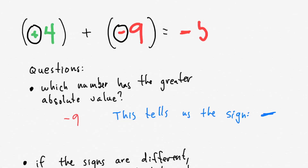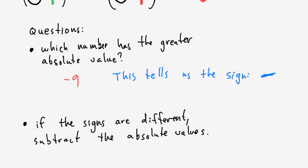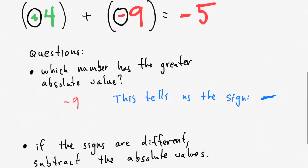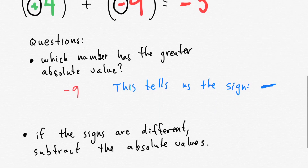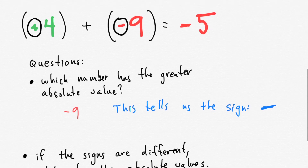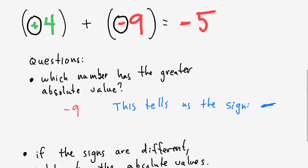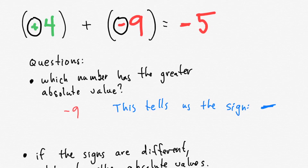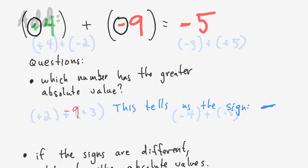Nine minus four is five, and that's it — that's all there is to it. I just asked two questions: which number has the greater absolute value? The negative number did. And if the signs are different, what's the difference between the absolute values? The difference of nine and four is five. That's it.